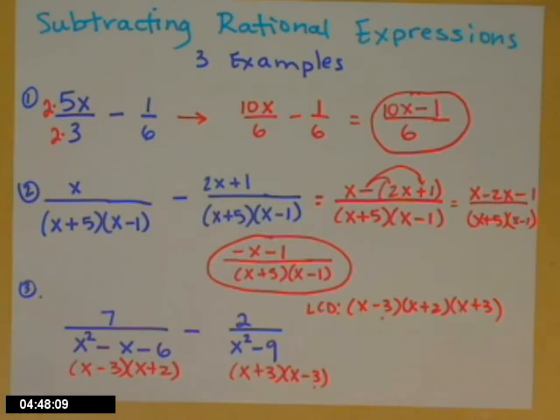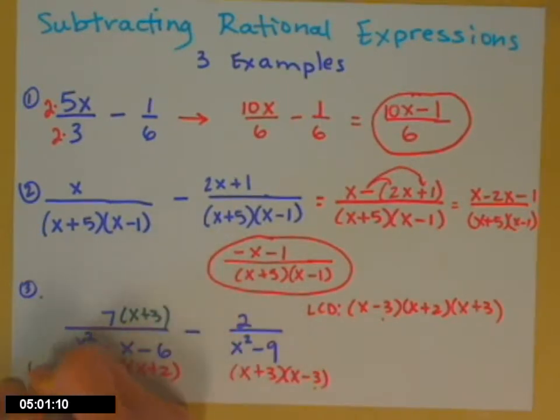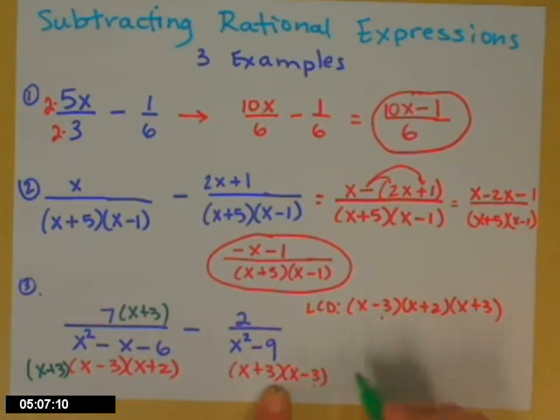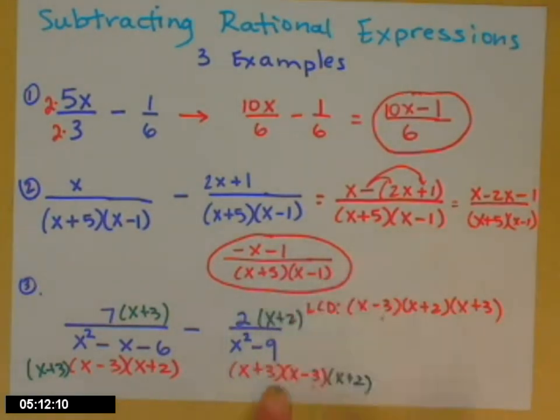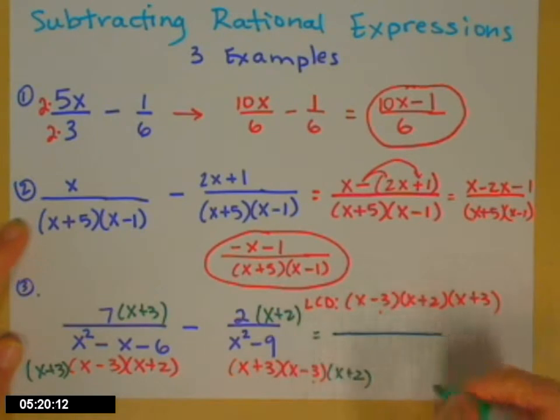Let me grab a new color. Because now when I look at that first fraction, I need to multiply top and bottom by the factor that it's missing from the LCD. So it's the x plus 3. So top and bottom get multiplied by x plus 3. Second fraction, the factor it's missing is x plus 2. So top and bottom by x plus 2. Now we're going to see if we can fit this on this page. So my LCD goes down here. x minus 3, x plus 2, x plus 3.